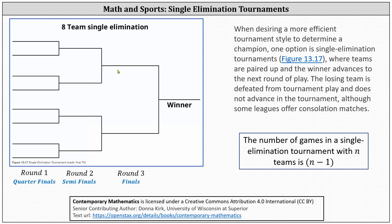The winners advance, the losers are out. The winners advance to the finals, and the winner of the finals wins the tournament. Again, if there are eight teams, there would be a total of seven games: four in round one or the quarterfinals, two in round two or the semifinals — that's six — and then one more in the finals or round three, which gives a total of seven games.